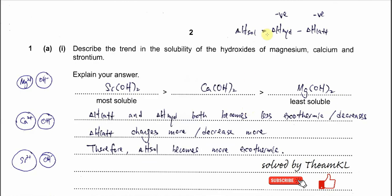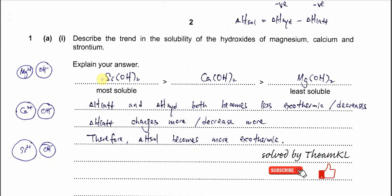For this question, it is better to use the equation for comparison: ΔH solution equals ΔH hydration minus lattice energy. First, you need to give the trend about the solubility. When going down Group 2, the Group 2 hydroxide solubility increases. So the most soluble is strontium hydroxide, followed by calcium hydroxide, and the least soluble is magnesium hydroxide.